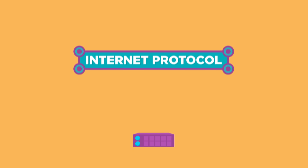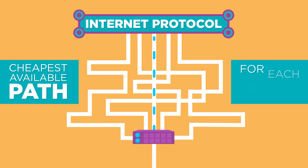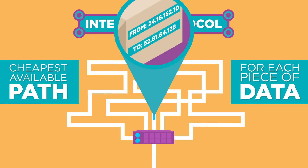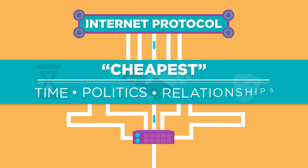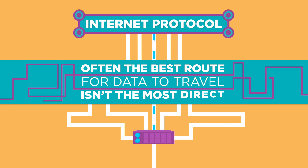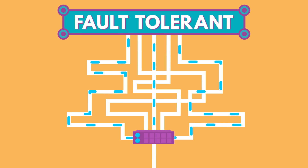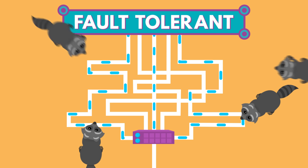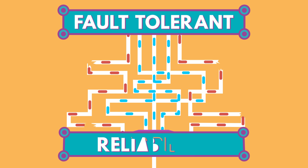As part of the internet protocol, every router keeps track of multiple paths for sending packets, and it chooses the cheapest available path for each piece of data based on destination IP address. Cheapest in this case doesn't mean cost, but time and non-technical factors such as politics and relationships between companies. Often, the best route for data to travel isn't necessarily the most direct. Having options for paths makes the network fault tolerant, which means the network can keep sending packets even if something goes horribly wrong. This is the basis for a key principle of the internet: reliability.